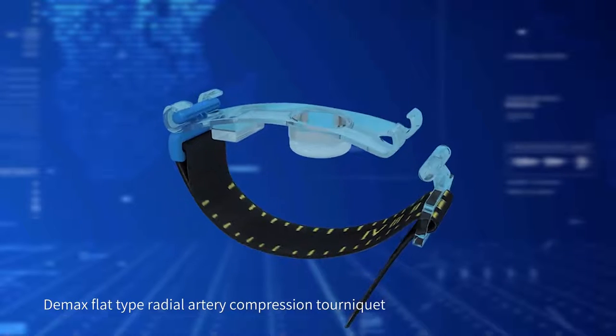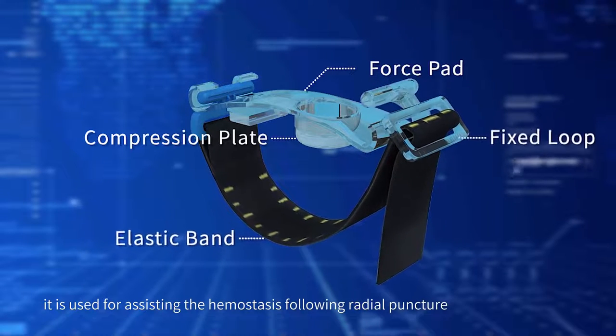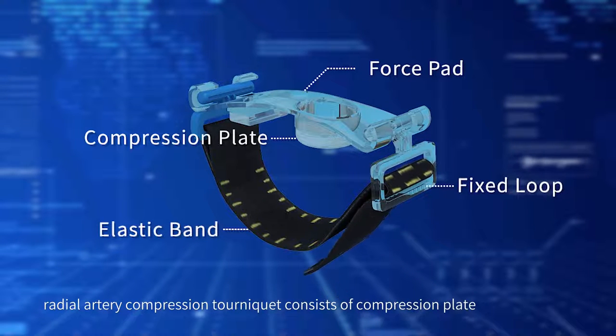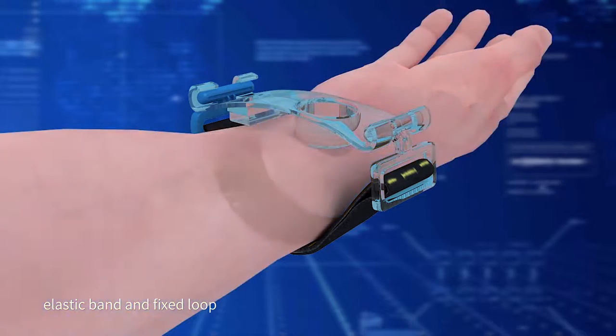D-MAX Flat-Type Radial Artery Compression Tourniquet. It is used for assisting the hemostasis following radial puncture. Radial Artery Compression Tourniquet consists of compression plate, force pad, elastic band, and fixed loop.